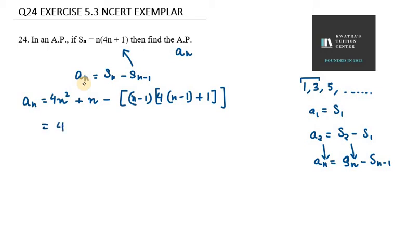So now we have 4n square plus n minus. First of all I will solve the inside bracket. So multiplying n minus 1 to the first term as well as to next term. So 4 times n minus 1 square plus n minus 1.